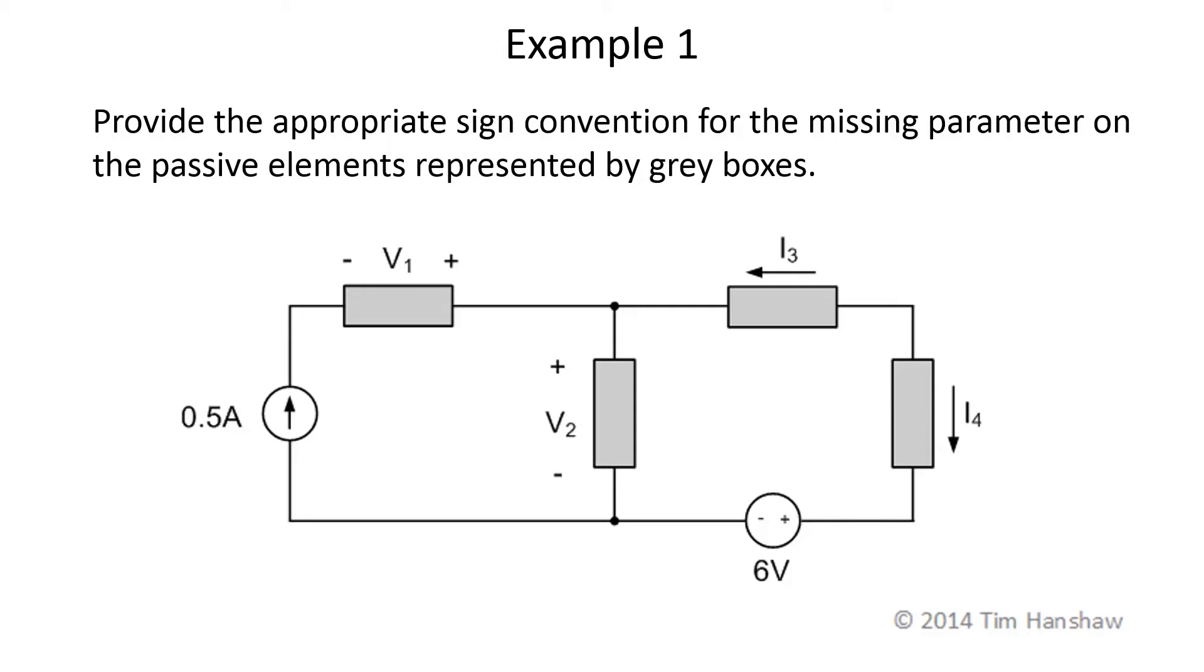In this example we want to assign the missing parameter for the passive elements represented by the gray boxes. We need to assign that according to the passive sign convention.